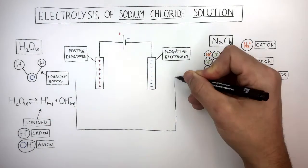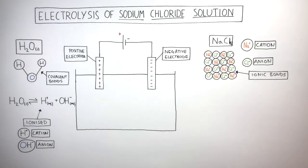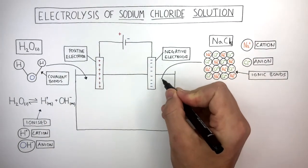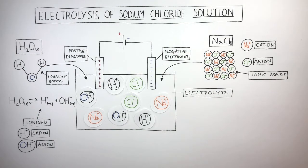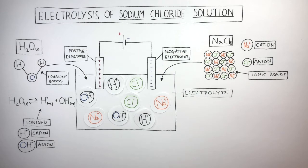The container holds the electrolyte, which consists of water and sodium chloride. The electrolyte is the ionic compound being broken down by electricity. Notice how the ions are free to move in the electrolyte — the sodium chloride has dissociated so the ions are free to move, and the water molecule has ionized into hydrogen and hydroxide ions.